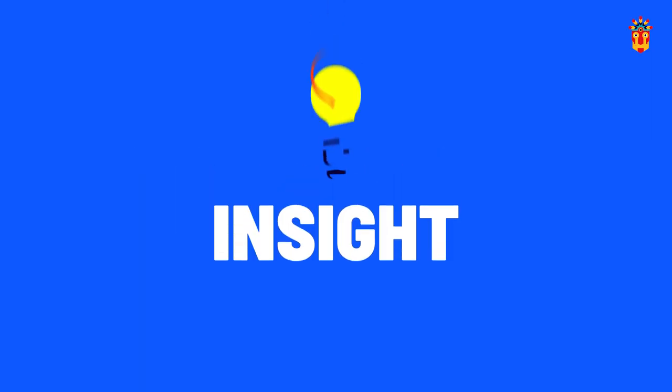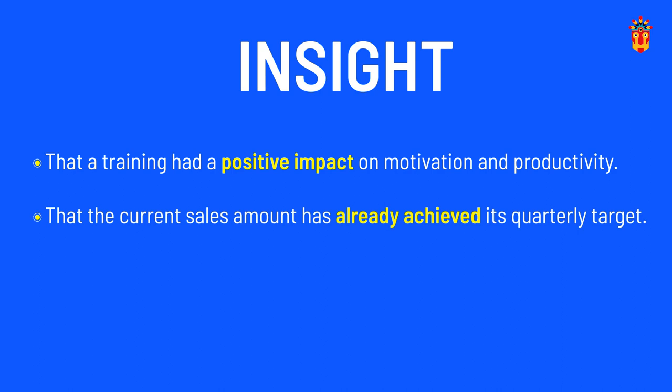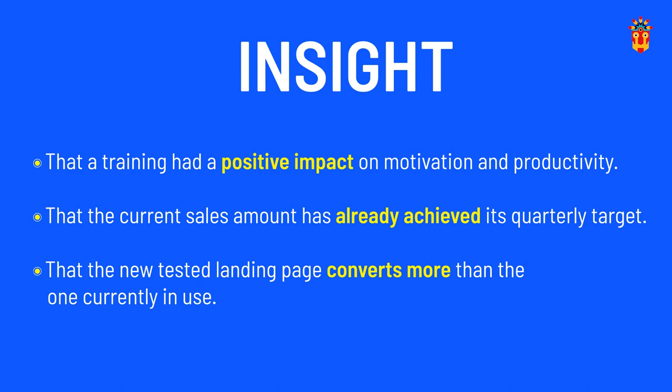These prerequisites also help you to identify which are your key charts and visuals, usually related to a key business question or a performance indicator. Next, you will be able to identify the insight — the key message to be communicated and explained with the visuals. For instance, that a training had a positive impact on motivation and productivity, that the current sales amount has already achieved its quarterly target, or that the new tested landing page converts more than the one currently in use.